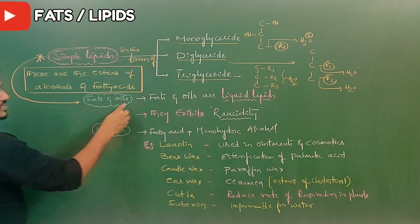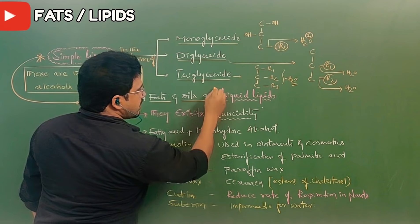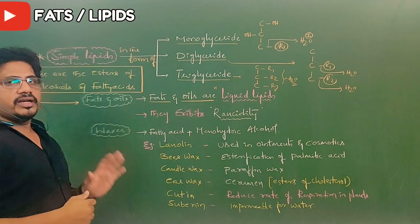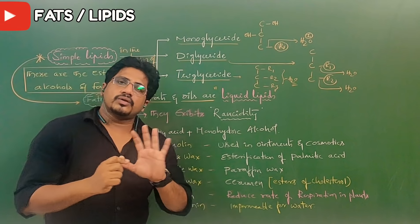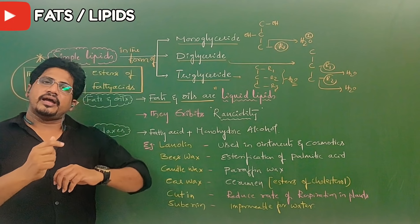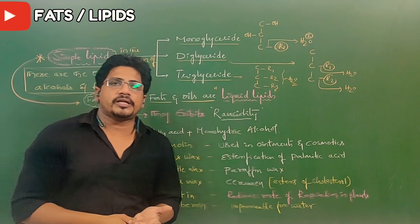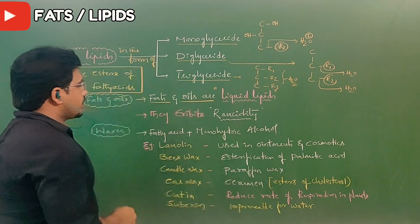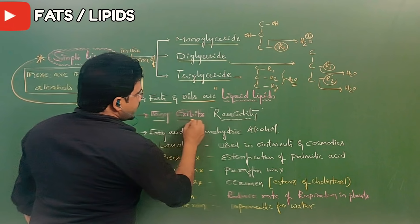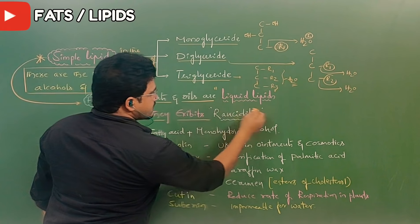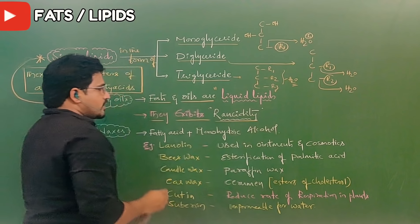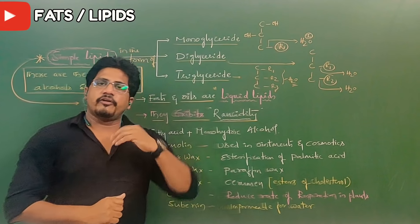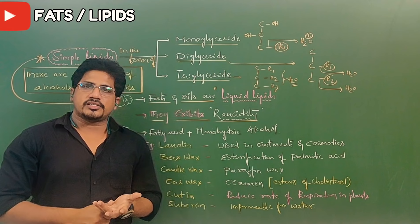Simple lipids are in two categories. Number one is fats and oils. Fats and oils are liquid lipids at room temperature. Below room temperature — probably 20 degrees Celsius — fats become oils. Now, these exhibit rancidity. Generally fats and oils are hydrophobic in nature and are never dissolved in water.